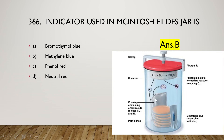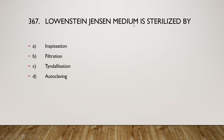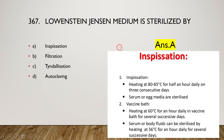The anaerobic gas jar uses an anaerobic gas pack envelope containing chemicals to release CO2 and H2 to maintain anaerobic conditions. Next: Lowenstein-Jensen medium is sterilized by inspissation, filtration, tindalisation, or autoclaving? The right answer is option A, inspissation. Inspissation is a heating technique involving heating at 80–85°C for half an hour daily on three successive days. Serum or egg media are sterilized by this process.